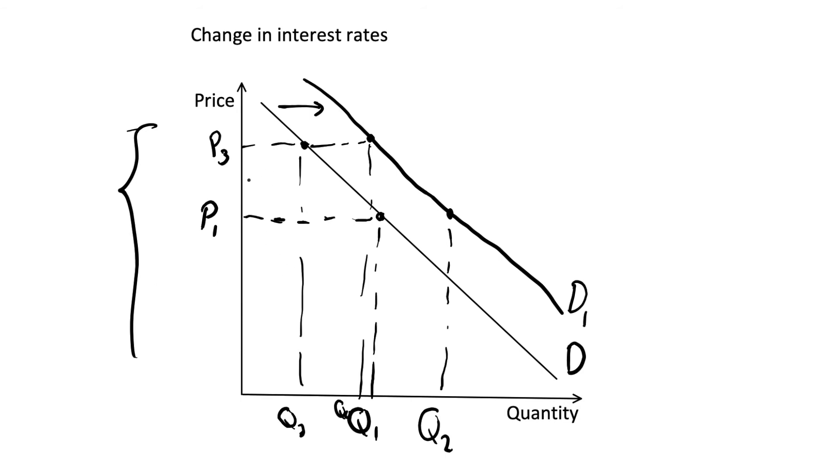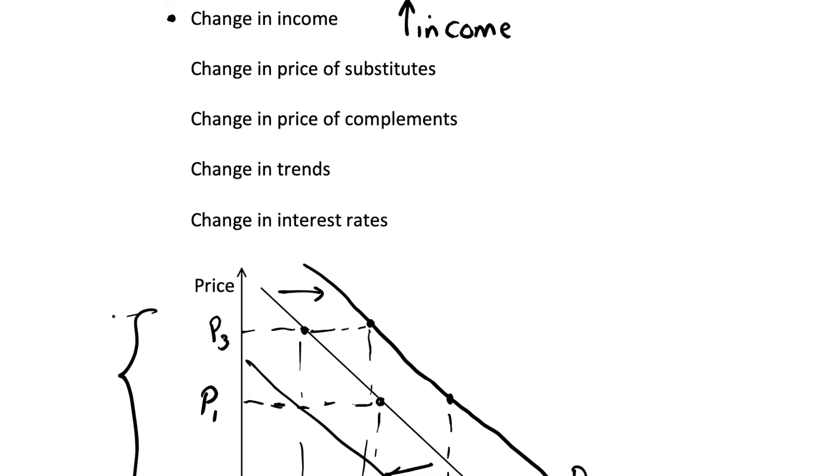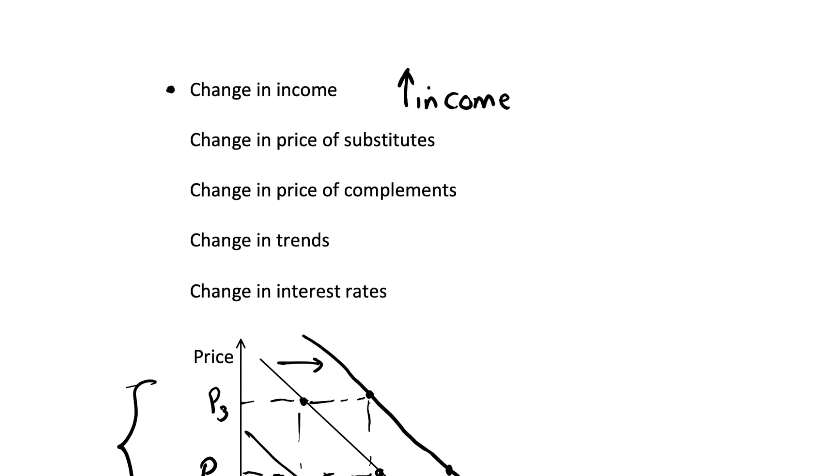So this shifts our demand curve to the right. And equally, if we were to have a decrease in income, the opposite would be true and we'd have a shift to the left to demand curve D2 as I've drawn it here. So that's just one factor that can shift our demand curve. I've listed out a number of other possible things that could shift our demand curve.